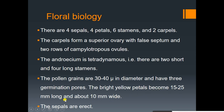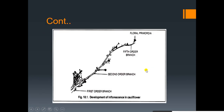The bright yellow petals become 15 to 25 millimeters long and about 10 millimeters wide. The sepals are erect. In the image we can see the first order, second order, and fifth order branches of cauliflower, and lastly the flower structure of the cauliflower portion.